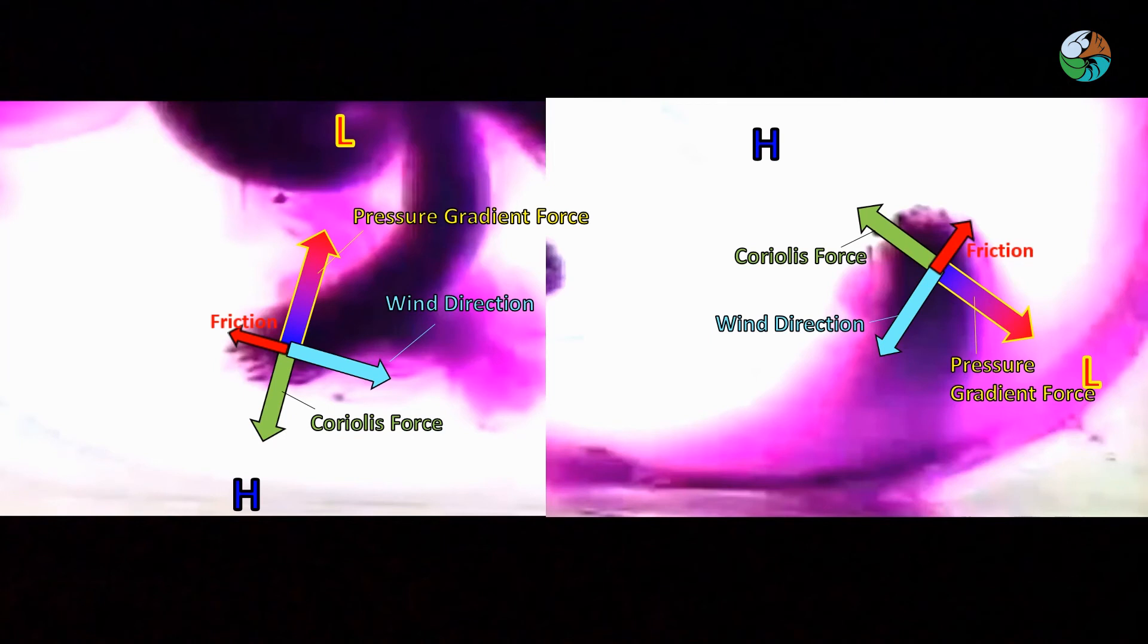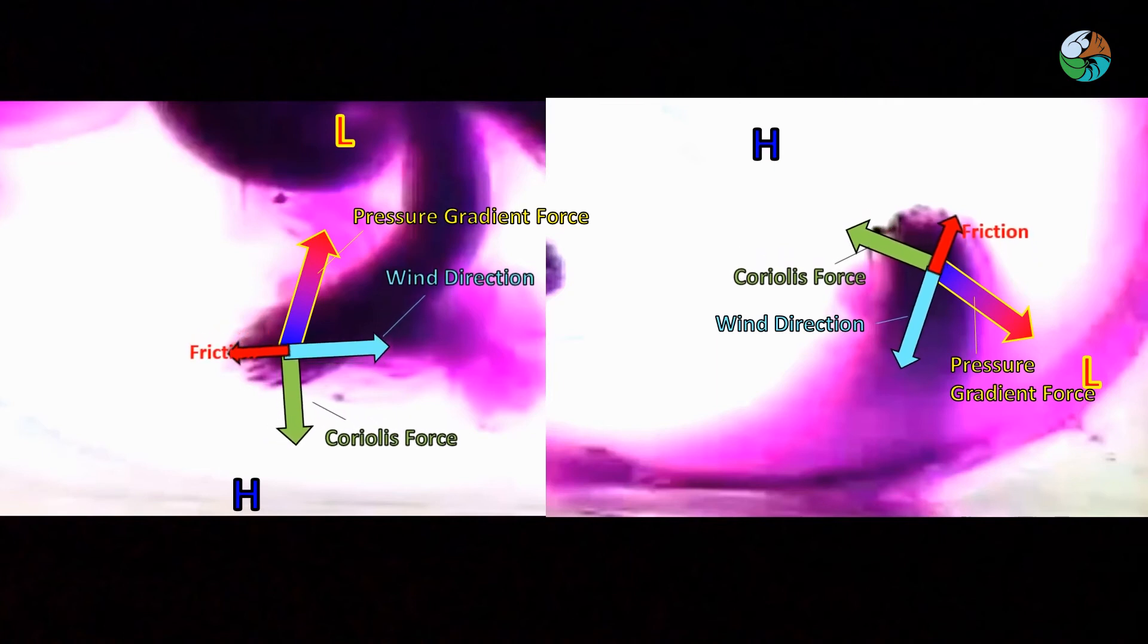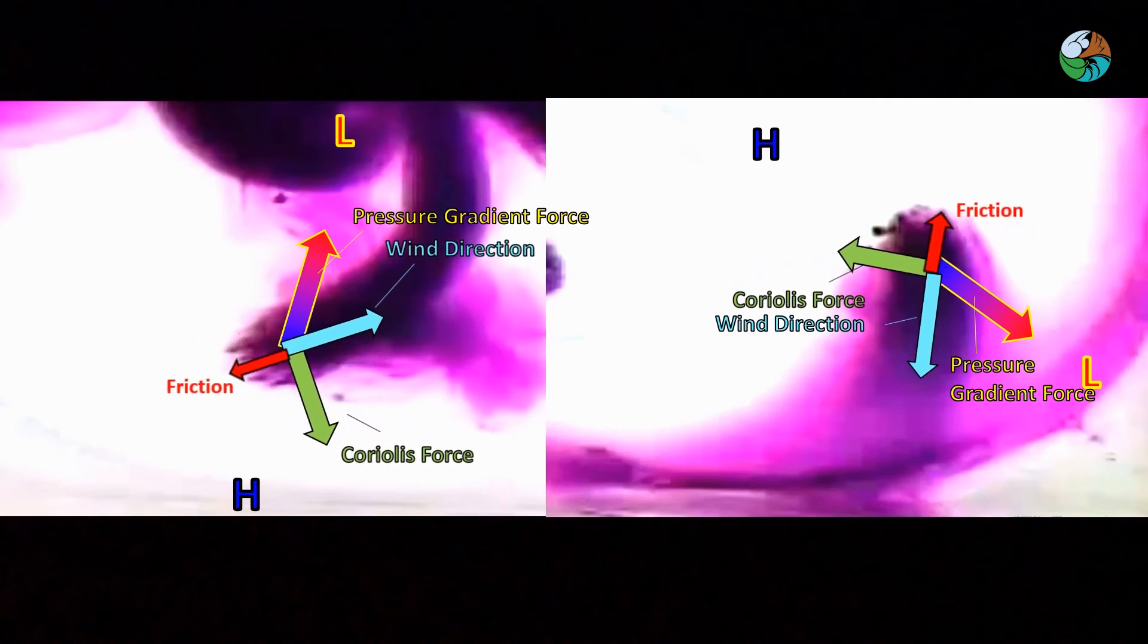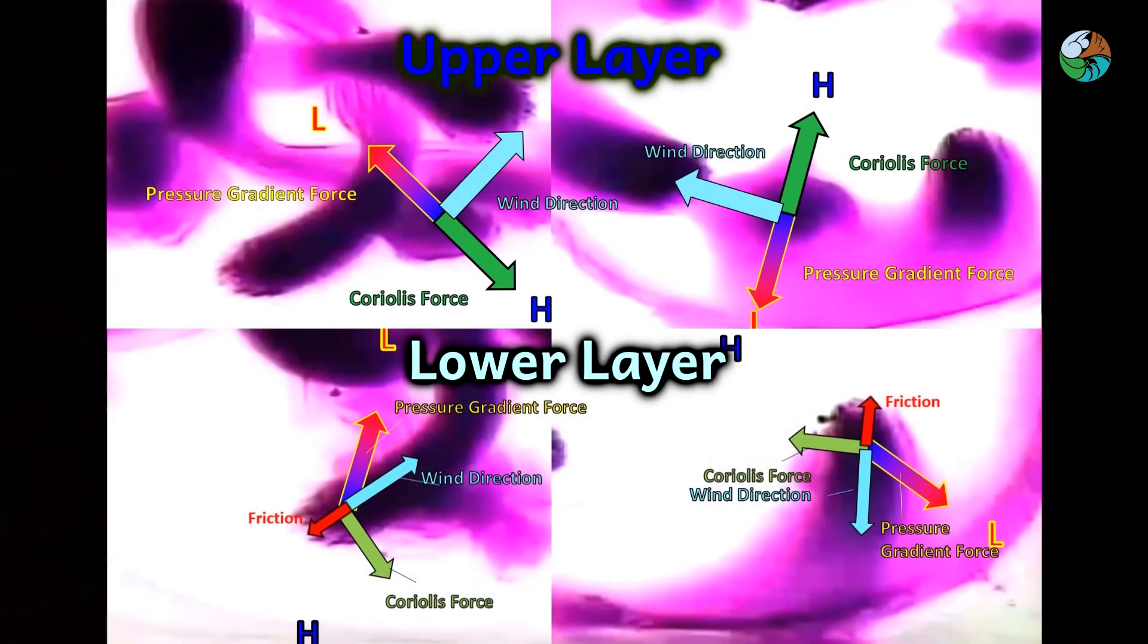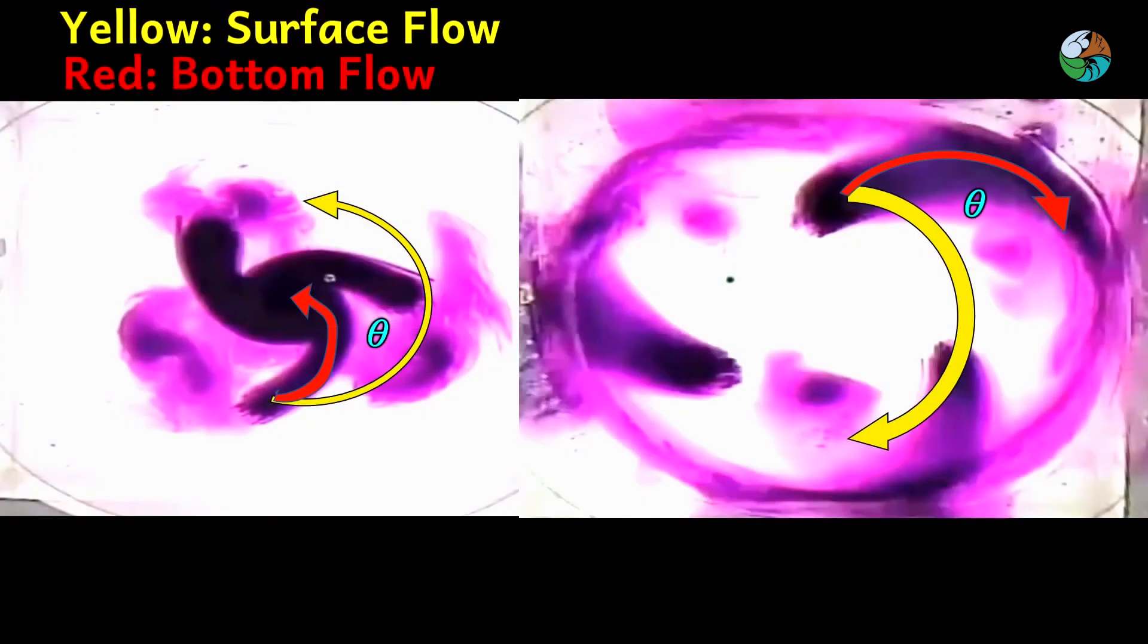As a result, the pressure gradient force wins. The flow would slightly bend towards the low pressure region. As frictional force keeps increasing down the atmosphere, the flow bends more and more. That's why the flow at lower layers and at upper layers make an angle with each other.